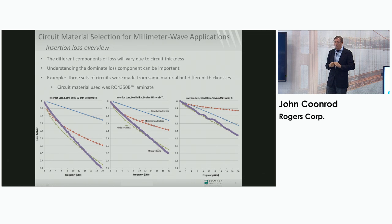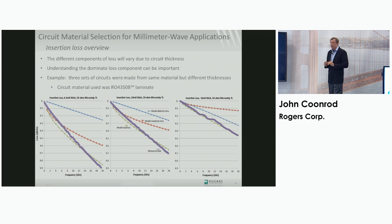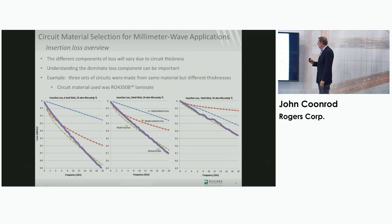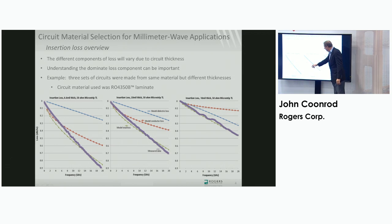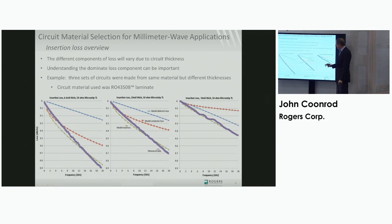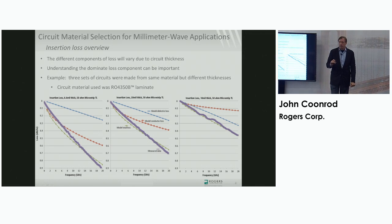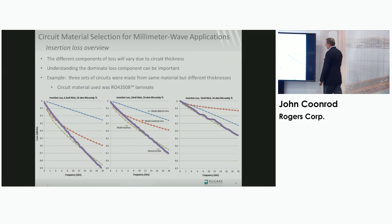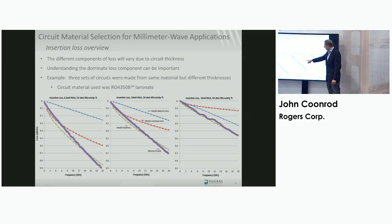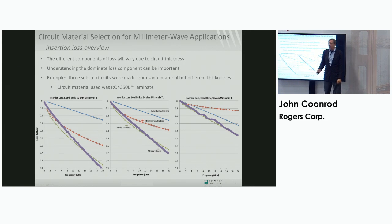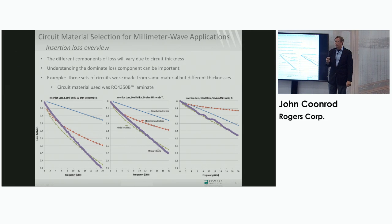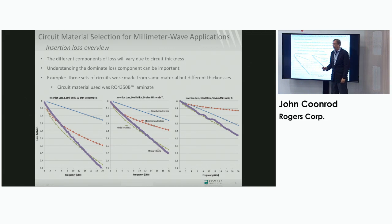The model used here is Hammerstad and Jensen closed-form equations, which I like because it breaks down conductor losses and dielectric losses separately. For the 10 mil thick circuit, the total model (green curve) matches pretty close to the measured results. The conductor loss (red curve) is actually the dominant factor; dielectric losses are not dominant. For the thinner 6.6 mil circuit, conductor losses dominate even more — that's why you see the insertion loss shifting down so much.